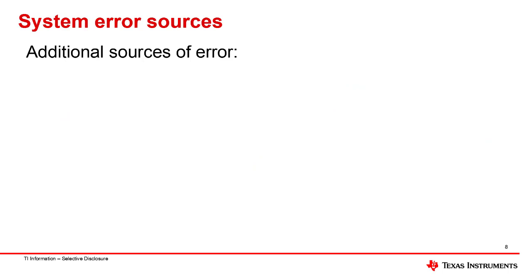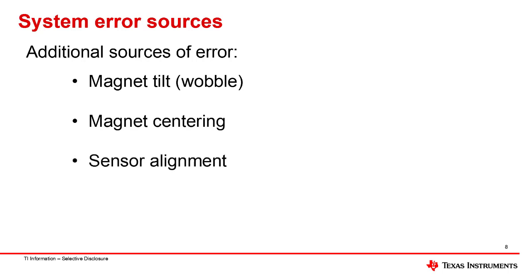A number of additional system level error sources should also be considered in this application, namely: magnet tilt or wobble, magnet centering, sensor alignment caused by tilt or offset of the sensor, and measurement noise.